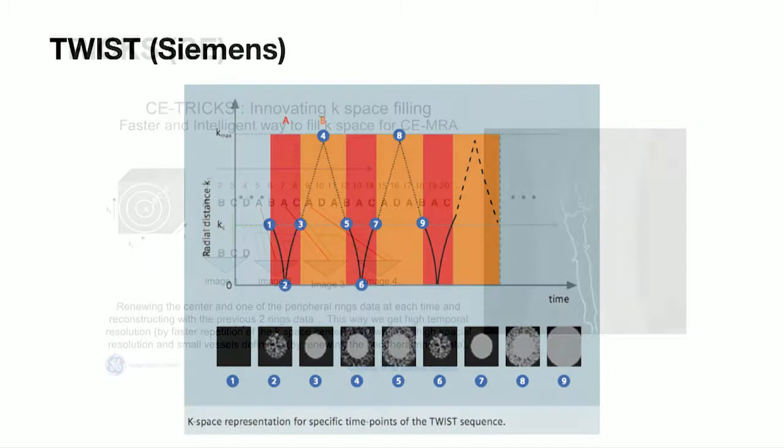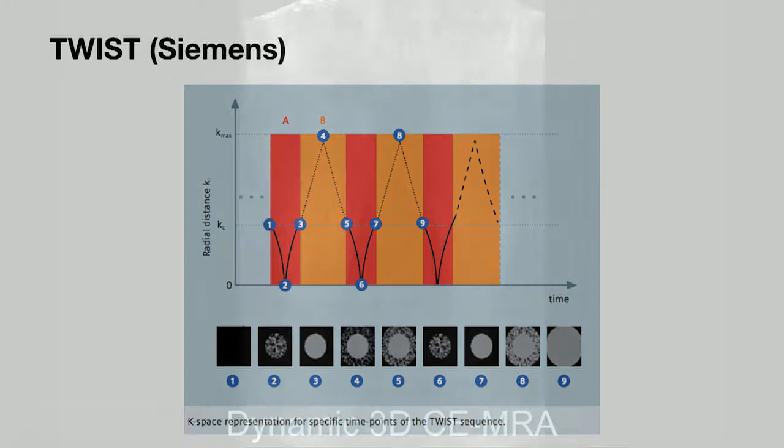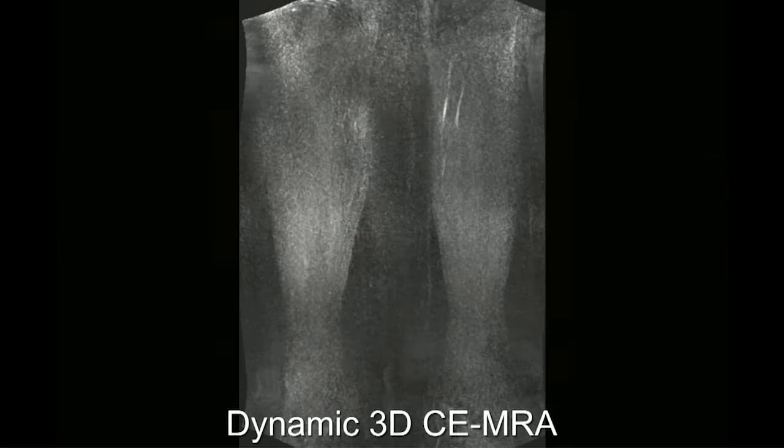Twist is the Siemens version, with a slightly different K-space that mixes up different parts of the edges of K-space — they feel it's more robust. The advantage of these techniques is they are very robust and work really well. We run them on absolutely every body contrast-enhanced MRA for the lower limbs, so we can always get a pure arterial phase on every patient regardless of disease severity, and it saves us from venous contamination.